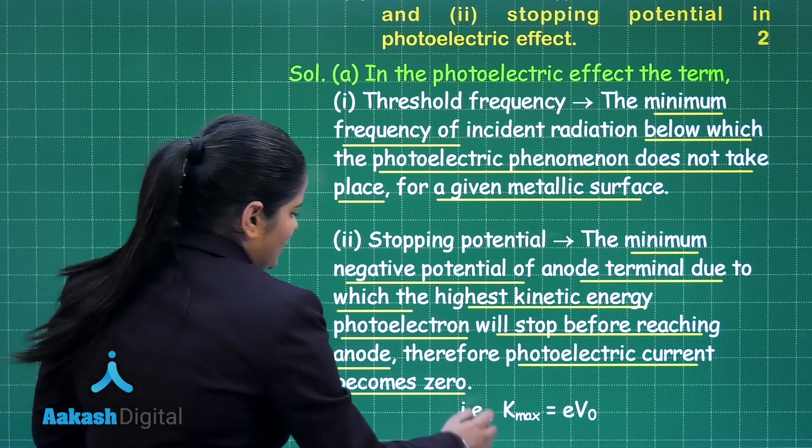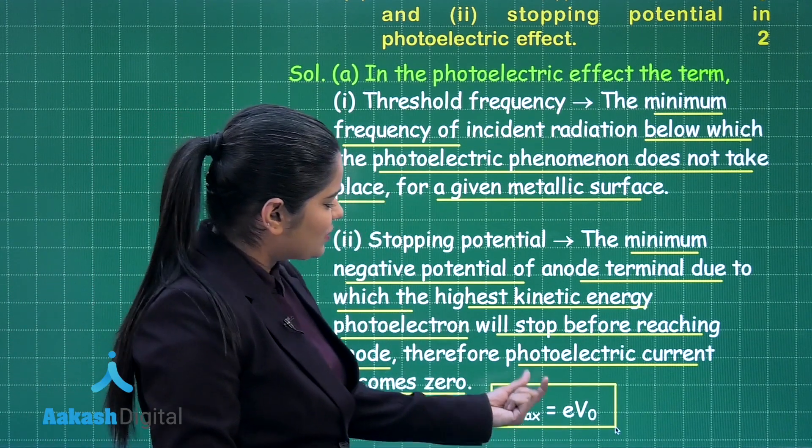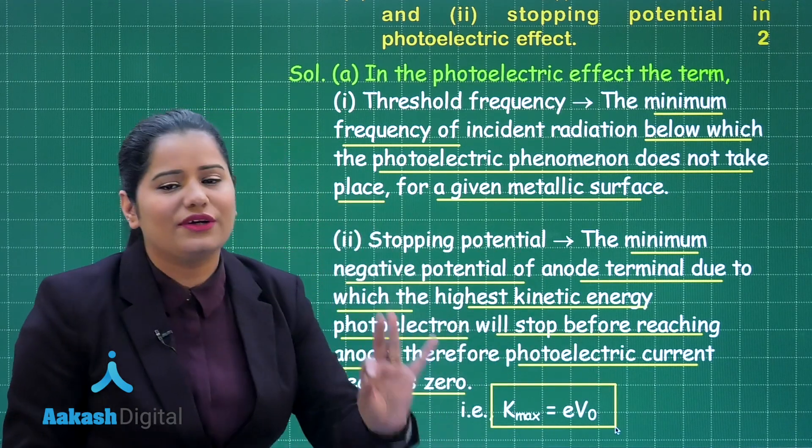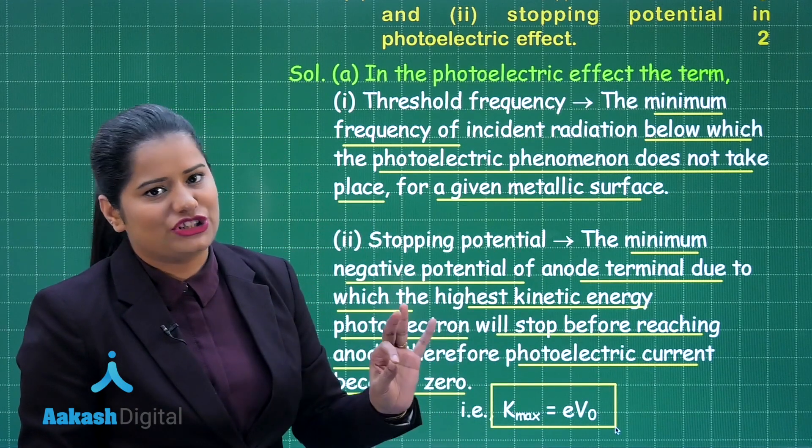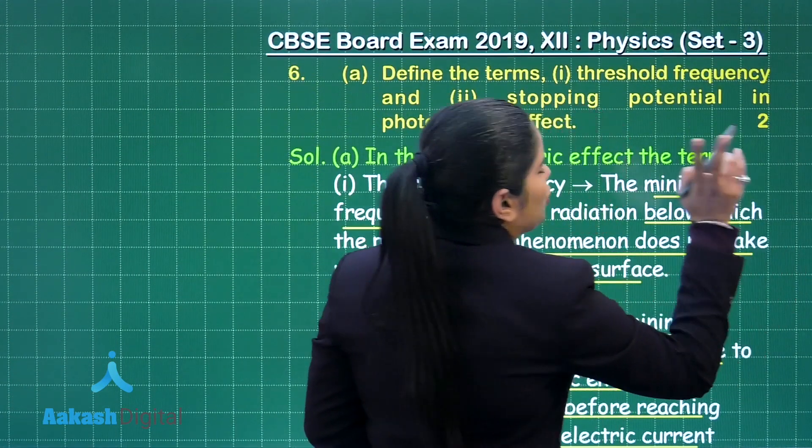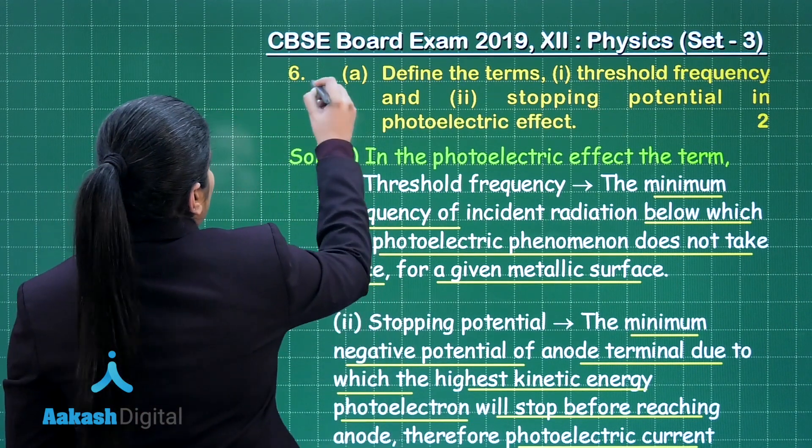And we know this will be equal to Kmax. So Kmax is going to be equal to eV₀ where e is the charge on the electron and V₀ is the stopping potential. As I have told you earlier also, this question is for two marks and part A of this question holds one mark.